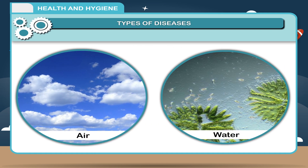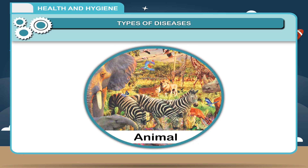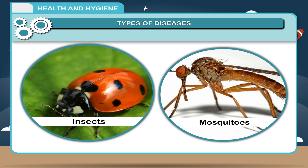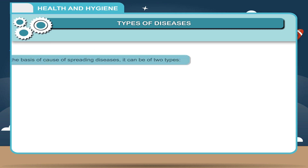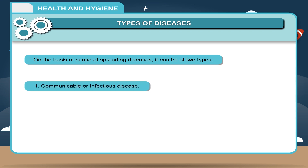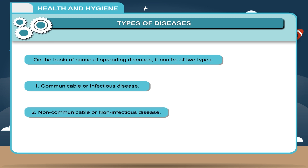Types of Diseases: Some diseases are transmitted through air, water and contact, or through animals like flies, insects and mosquitoes. On the other hand, some diseases are not transmitted. On the basis of cause of spreading, diseases can be of two types: communicable or infectious disease, and non-communicable or non-infectious disease.